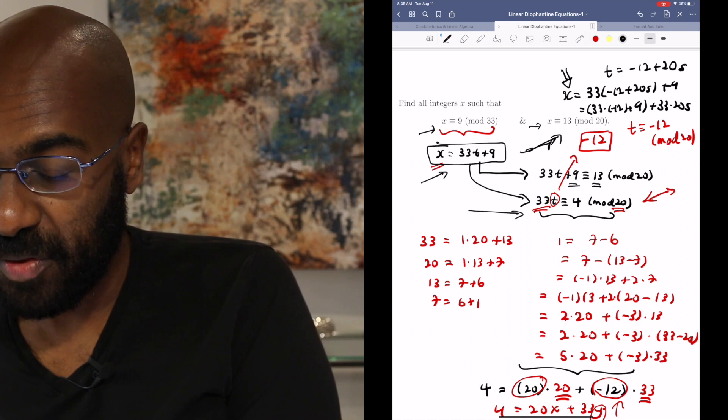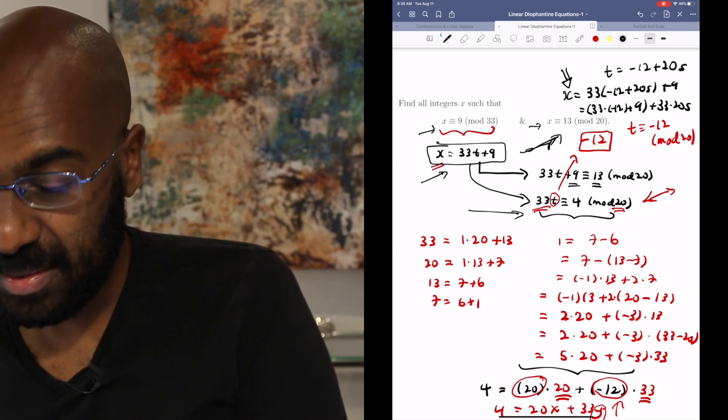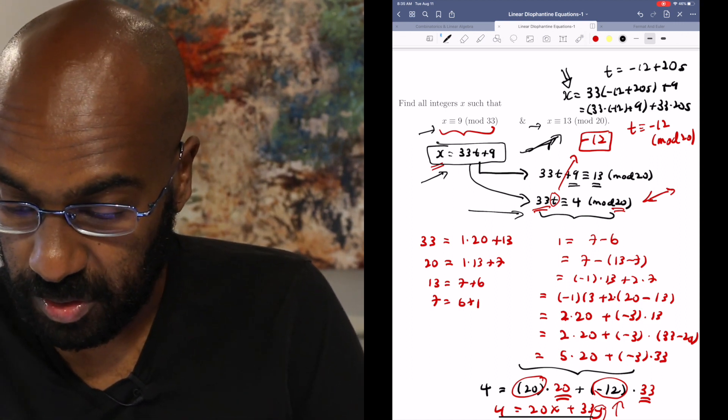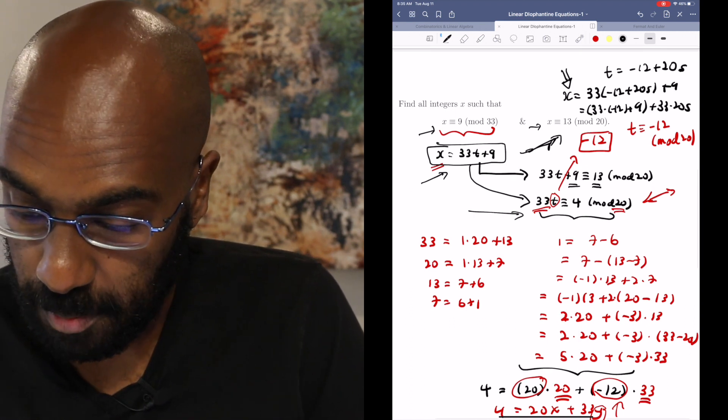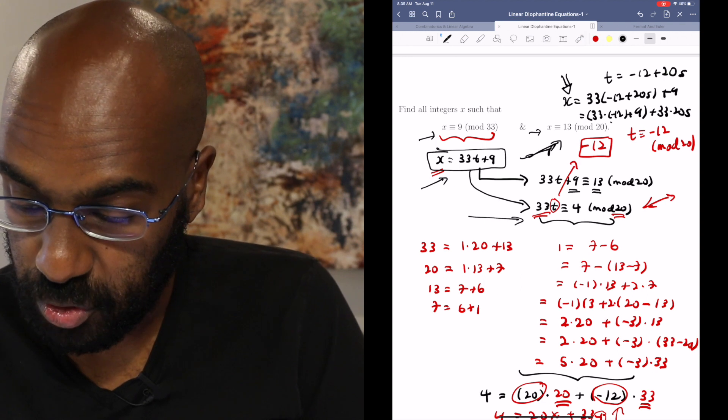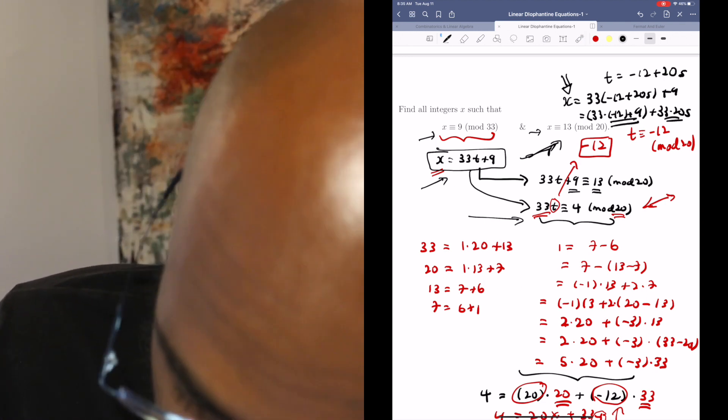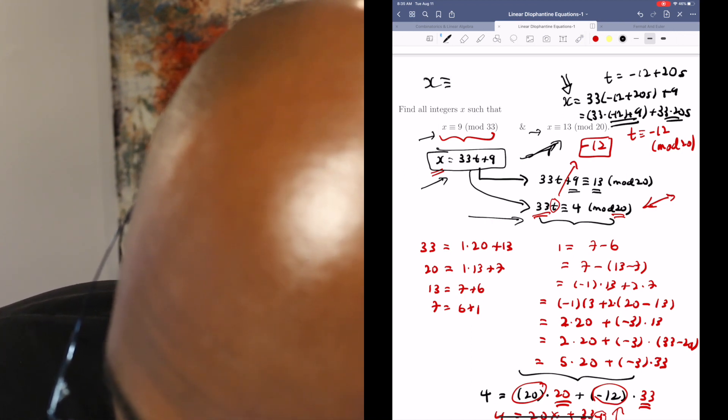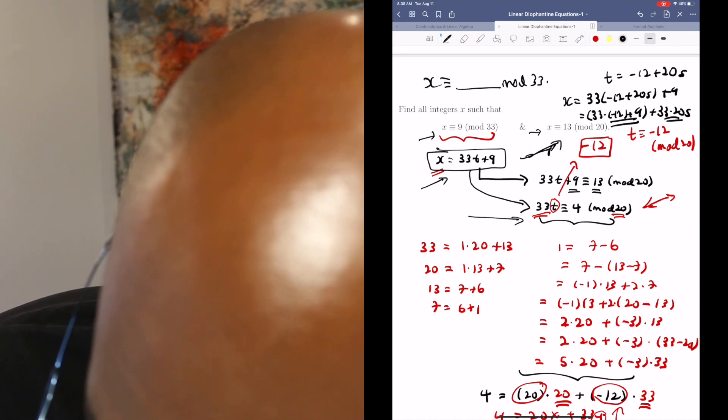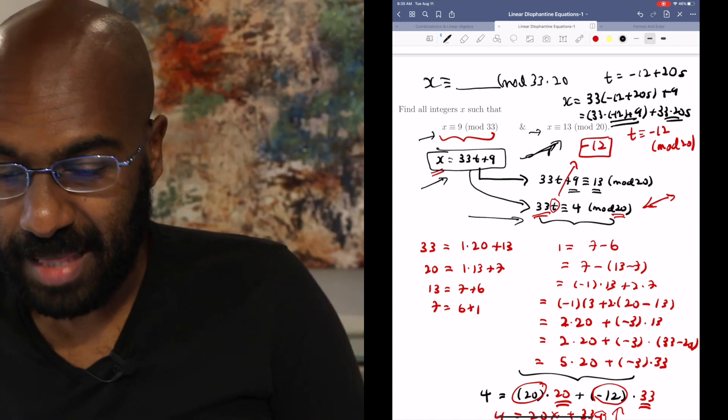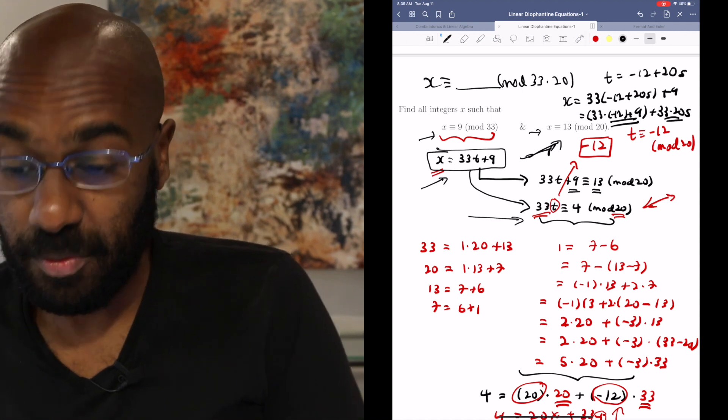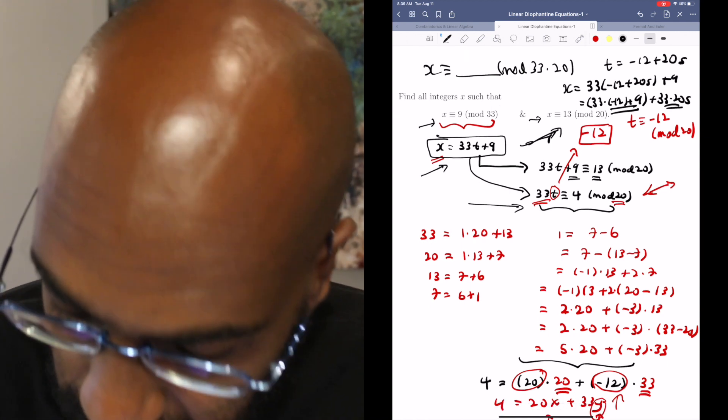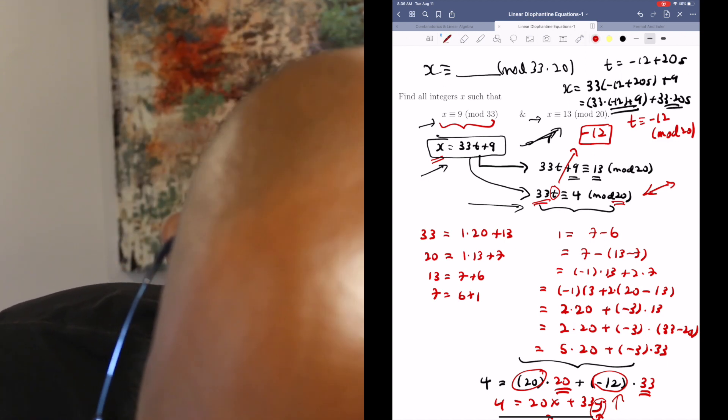And if you plug this actual thing in for x itself, it'll satisfy both of these congruence equations. So we do get a particular solution, and the solution itself is that x is congruent to a particular number modulo the product of 33 and 20. And the process of actually developing what that value is, is this process that we went about right over here. Now to make this explicit, this quantity here is negative 387.